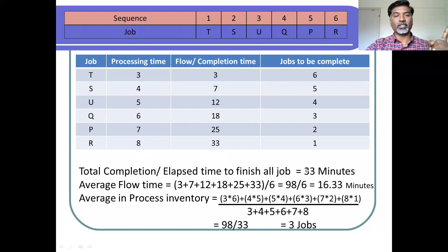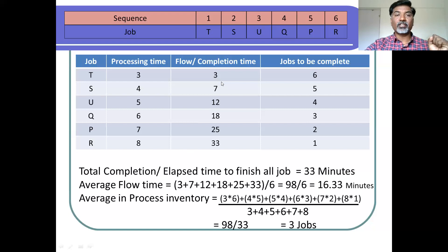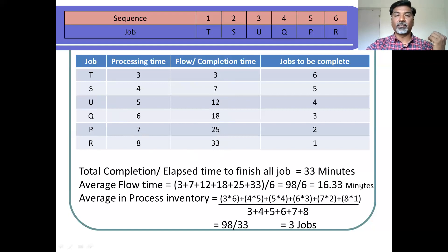Total elapsed time or total completion time is 33 minutes — all jobs are completed in 33 minutes. The second result is average flow time, calculated by the addition of all flow times divided by the number of jobs. There are 6 jobs, so: 3 plus 7 plus 12 plus 18 plus 25 plus 33 divided by 6 gives 16.33 minutes. So the average flow time is 16.33 minutes.